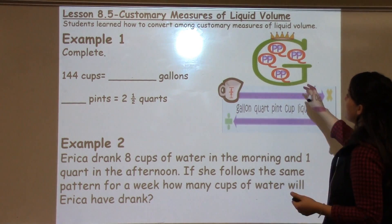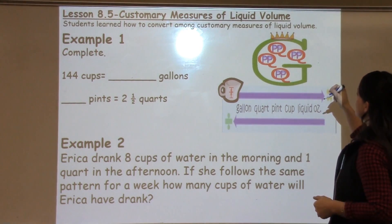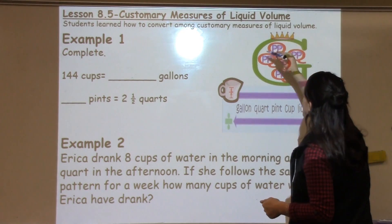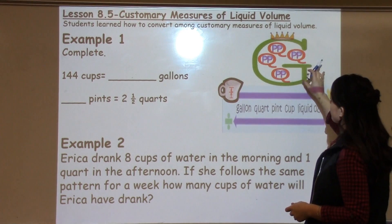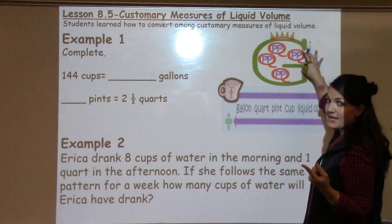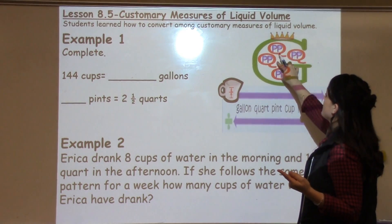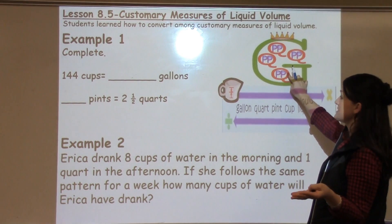The first one is called the Big G, or the Land of G, and the students really like drawing it. But what it signifies is the Big G is one gallon.